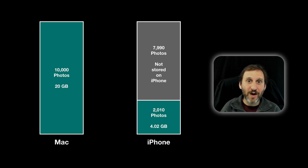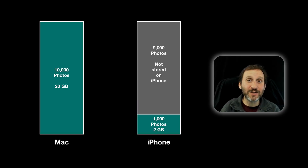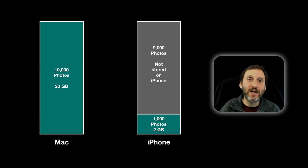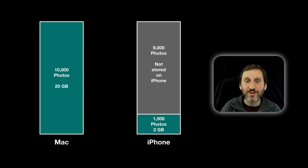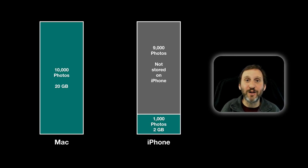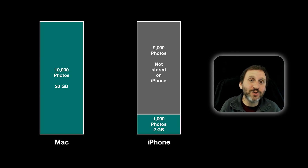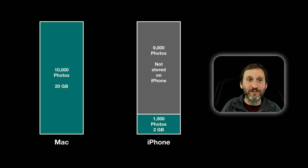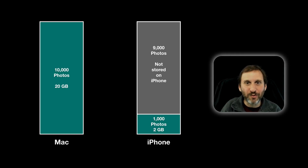Over time you may find you have even less stored — it happens automatically in the background. It might identify photos you haven't looked at in a long time and free up space for apps and other things. There's nothing you need to do; it adjusts automatically based on how much storage space you have left. Someone with 100 gigabytes available may have many more full resolution versions, while someone running short on space may have only a handful stored at full resolution.